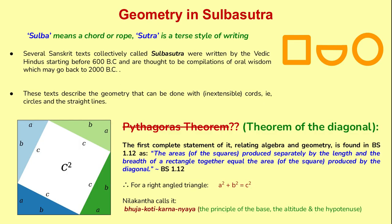In geometry, several Sanskrit texts collectively called the Sulba Sutra were written by the Vedic Hindus starting before 600 BC. They were thought to be compilations of oral wisdom going back to 2000 BC. These texts have prescriptions for building fire altars, or Agni, with the detailing of a geometry textbook, making it the oldest geometry textbook in existence. The word Sulba means a cord or rope, and Sutra describes the style of writing. It is also known that the theorem of the diagonal — known as the Pythagorean theorem in modern mathematics — is mentioned there.